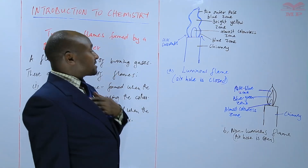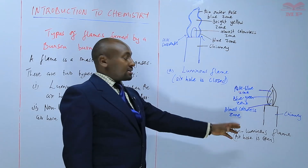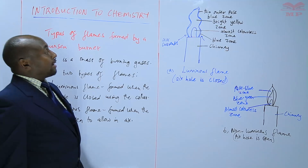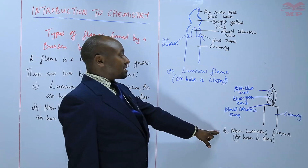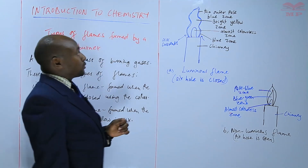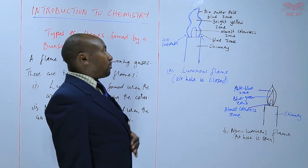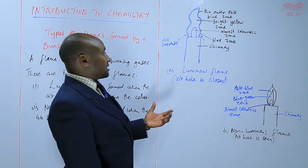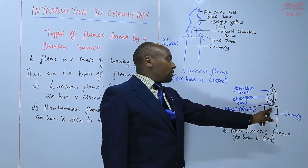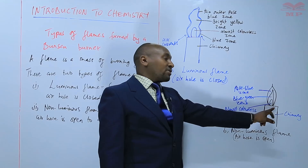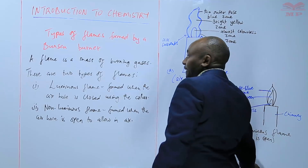Another difference: the luminous flame produces a lot of light, while the non-luminous produces less light — it's almost invisible. The luminous flame is less hot, but the non-luminous flame is very hot. We can also say that the luminous flame is formed when there is incomplete combustion — incomplete burning of the gas because there isn't sufficient air. But for the non-luminous flame, it is formed when there is complete combustion because there is a sufficient amount of air.